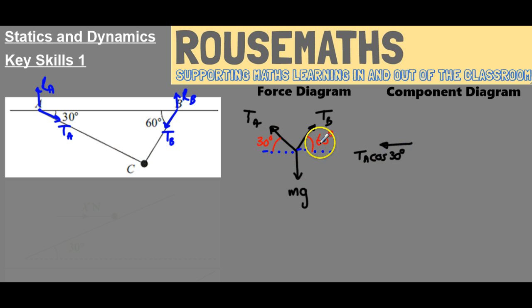Obviously it comes from SOHCAHTOA because I'm finding the adjacent side, so I'm going to be using cos. That's the horizontal component of the tension going to A. There'll also be a vertical component which is like that. If you can see in the triangle, it's the opposite side to the 30, so if I just put that in it's going to be the tension times sine of 30 degrees.